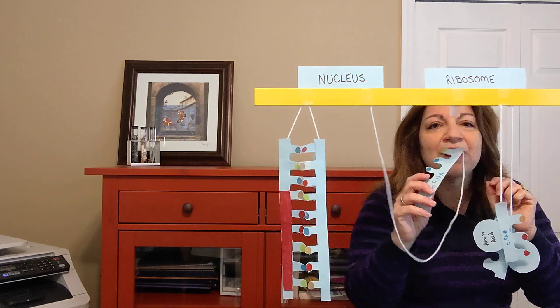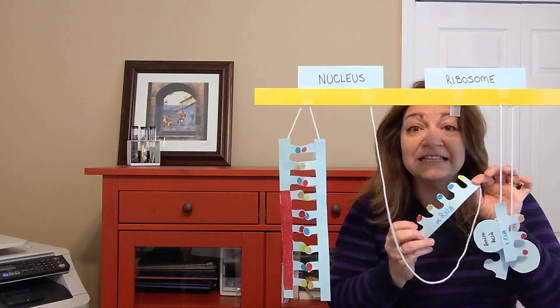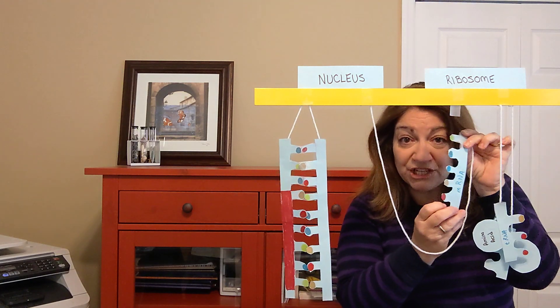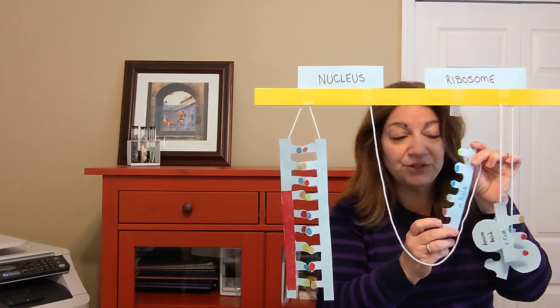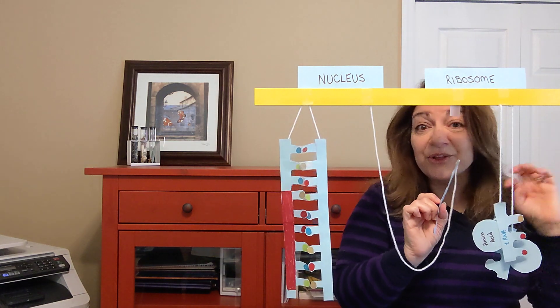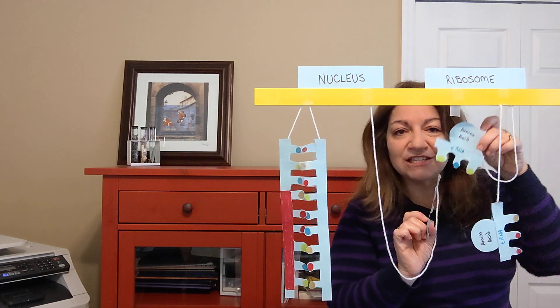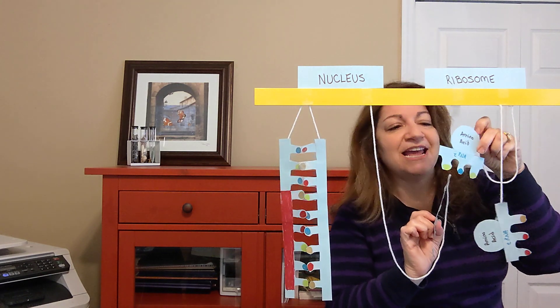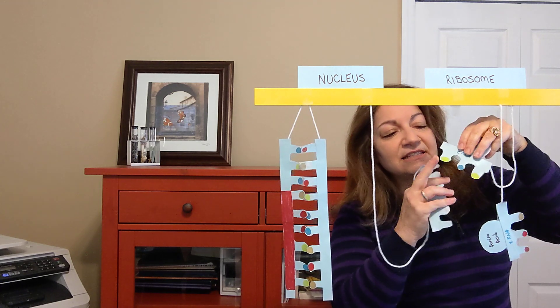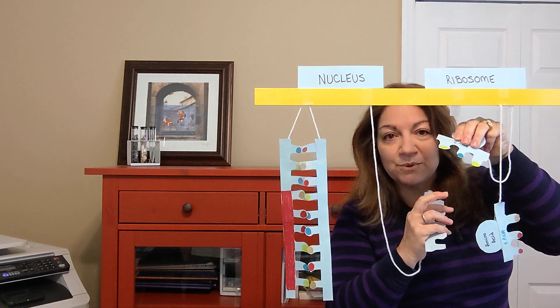So it comes out of the nucleus, travels to the ribosome. Now, here is where the proteins are going to be made. This is the information telling the cell how to make the proteins. So, around the ribosome are actually other little types of smaller bits of RNA called transfer RNA or tRNA. And tRNA is located, it contains three little nucleotides, three little nucleotide sequences.